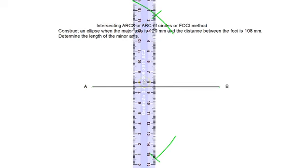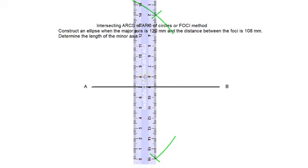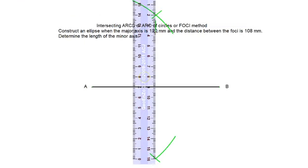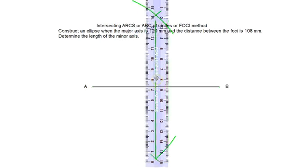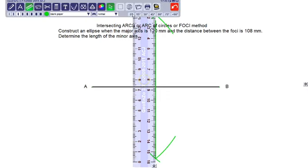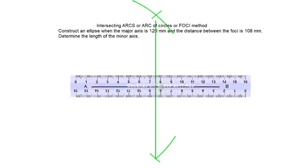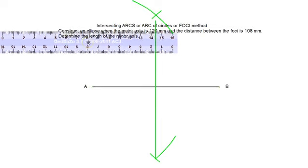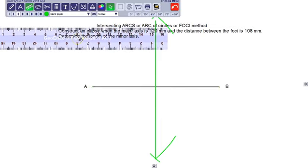This perpendicular bisector is dividing line AB into two equal parts. I just want to confirm, so I am checking it. You can draw it. If you are not convinced, you can check with the help of a scale — just check whether it is bisected or not. Mostly it is bisected into two equal parts.